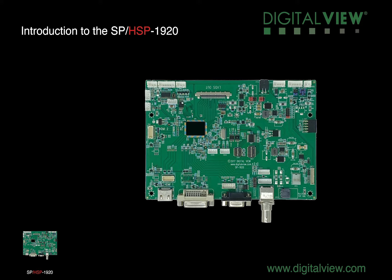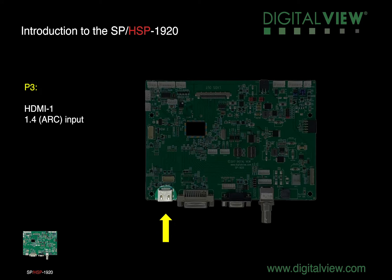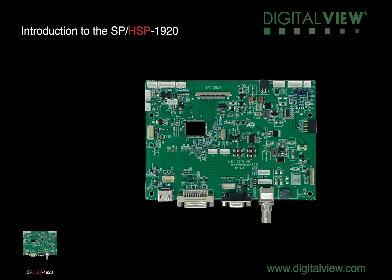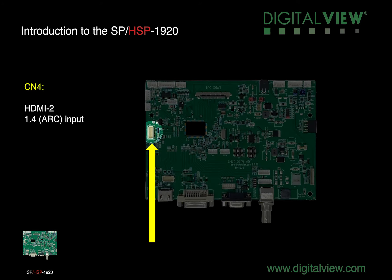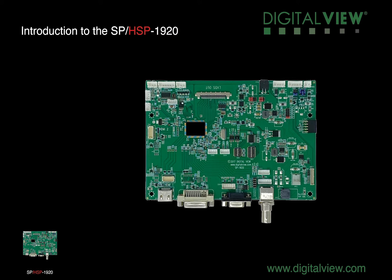Let's take a closer look at the controller's inputs, outputs and settings. P3 is the first HDMI input that supports HDMI 1.4. CN3 is an alternate input for HDMI 1. CN4 is the second HDMI input that supports HDMI 1.4.